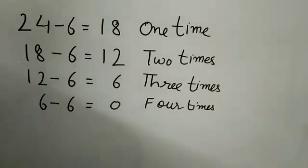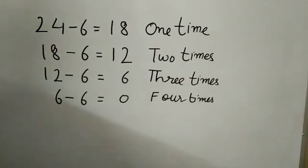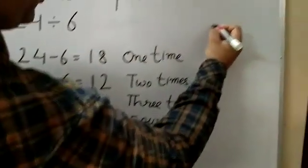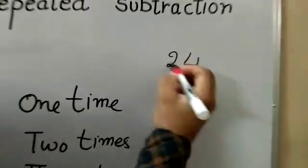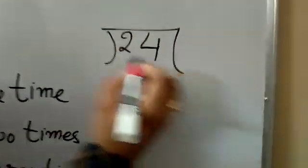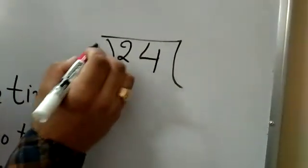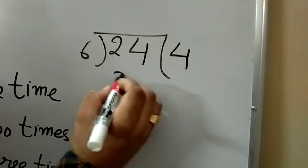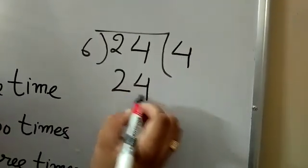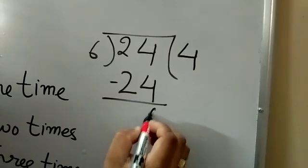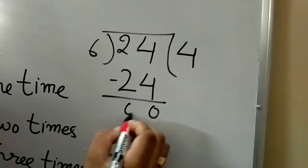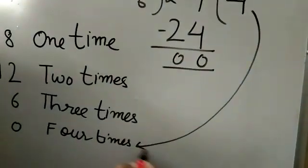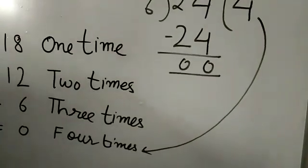It can be verified with the help of division. 24 divided by 6: 6 fours are 24, remainder is 0 — four times. 25 divided by 7. Thank you.